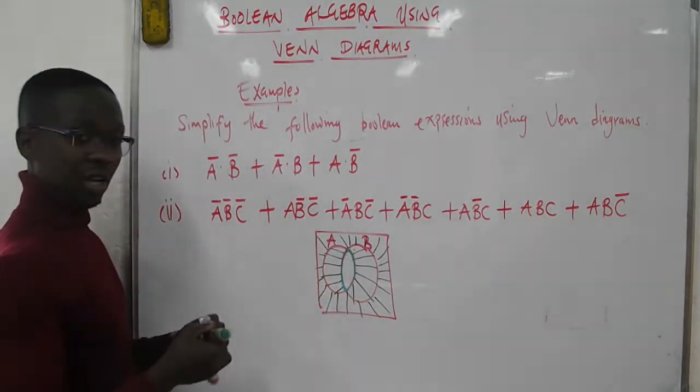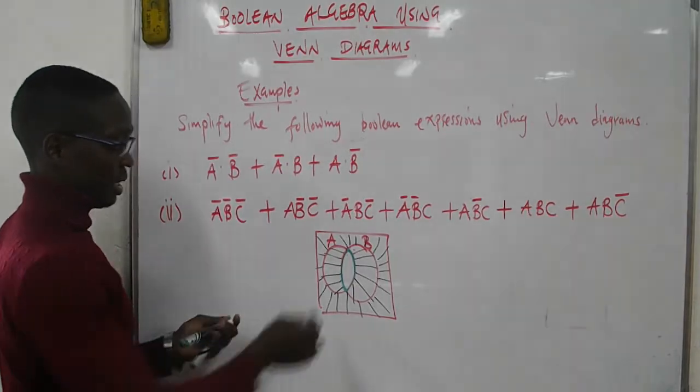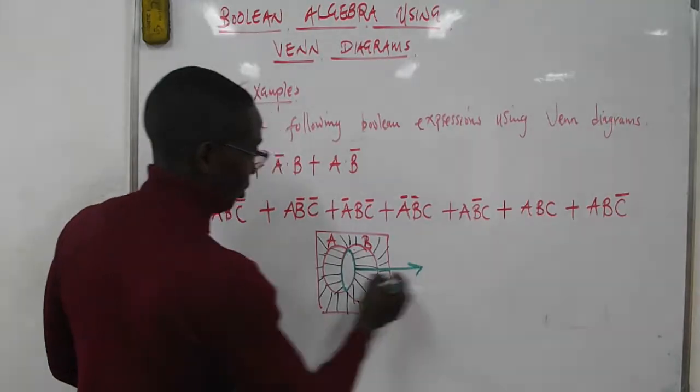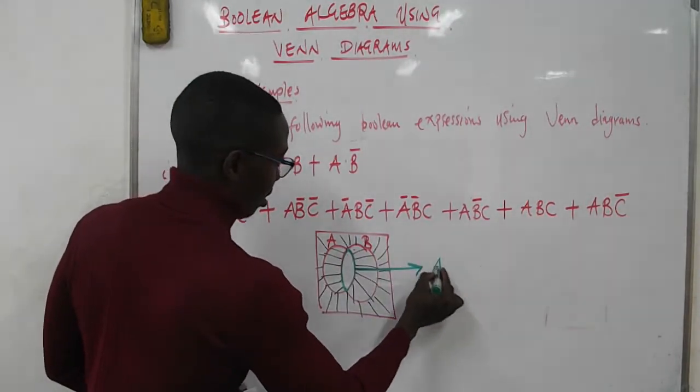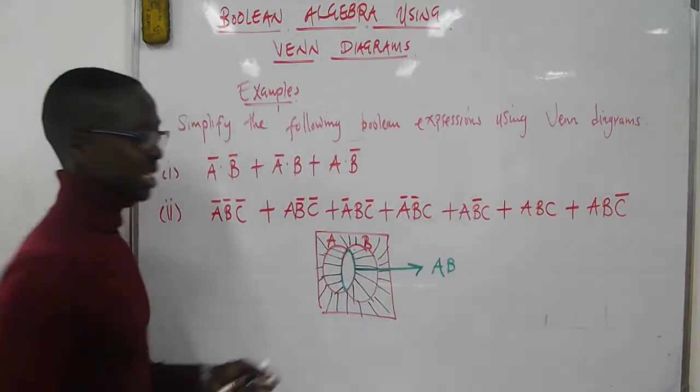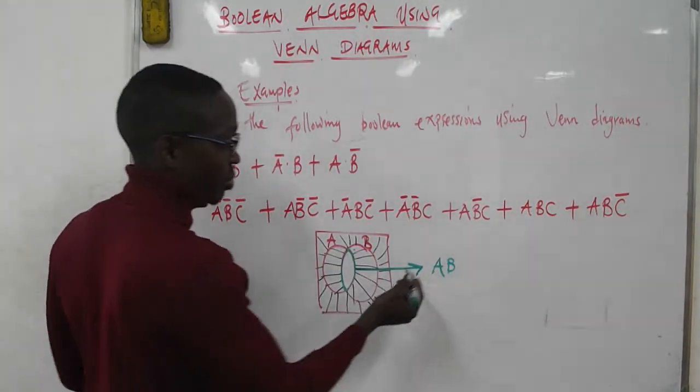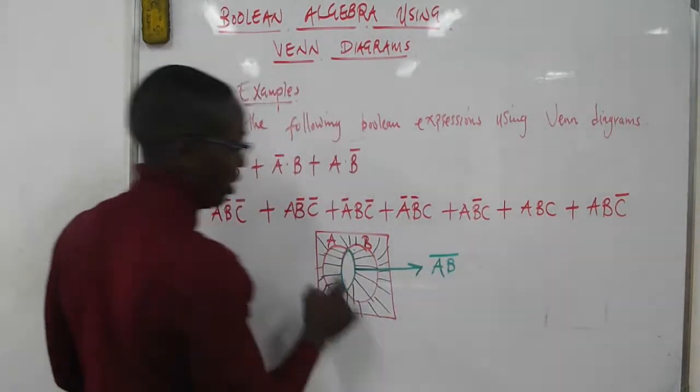From our previous lecture, this unshaded set is AB. But we need to describe the shaded region, which is everything outside set AB. Outside set AB is the complement of that set.